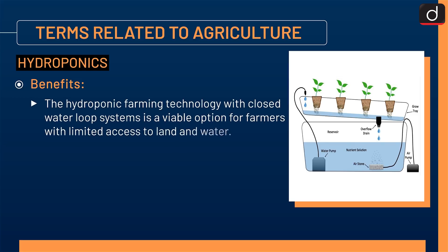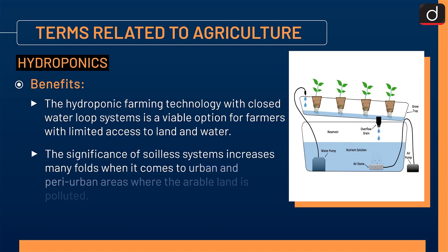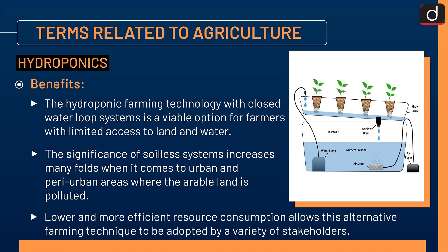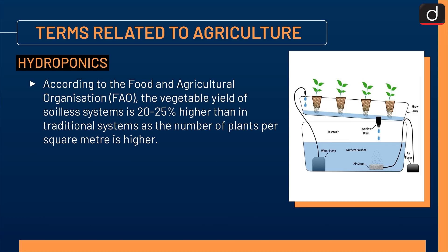Benefits of hydroponics include that the technology with closed water loop systems is a viable option for farmers with limited access to land and water. The significance of soil-less systems increases in urban and peri-urban areas where arable land is polluted. Lower and more efficient resource consumption allows this alternative farming technique to be adopted by a variety of stakeholders. According to the FAO, the vegetable yield of soil-less systems is 20 to 25 percent higher than in traditional systems, as the number of plants per square meter is higher.